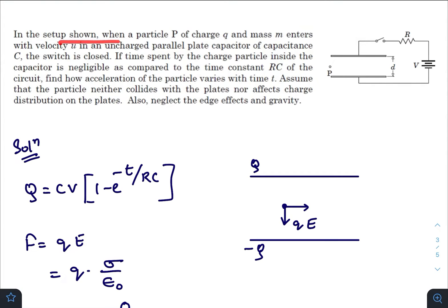In this question, there is a setup shown. When a particle P of charge Q and mass M enters with velocity U in an uncharged parallel plate capacitor of capacitance C, the switch is closed. If time spent by the charge particle inside the capacitor is negligible as compared to the time constant RC, find how acceleration of the particle varies with time T. Assume that the particle neither collides with the plates nor affects the charge distribution on the plates. Also neglect edge effects and gravity.